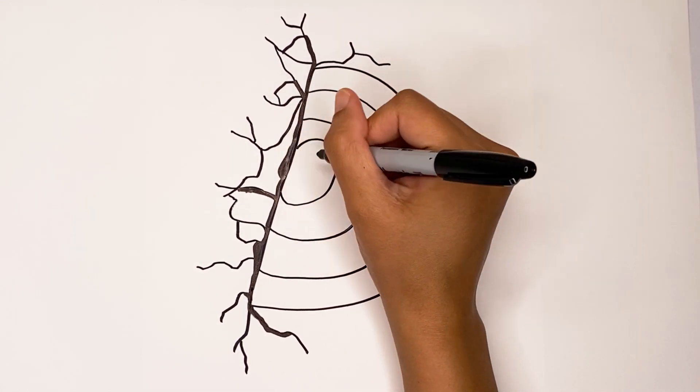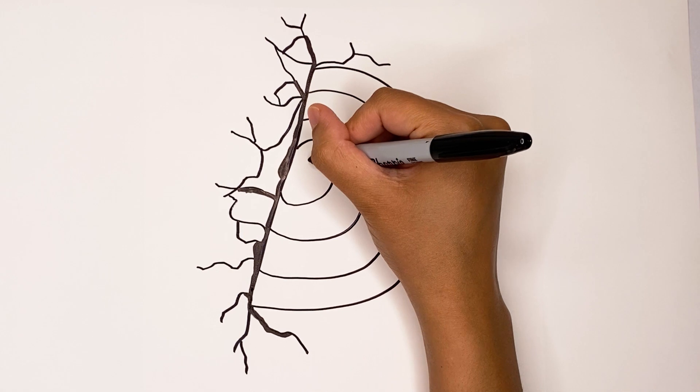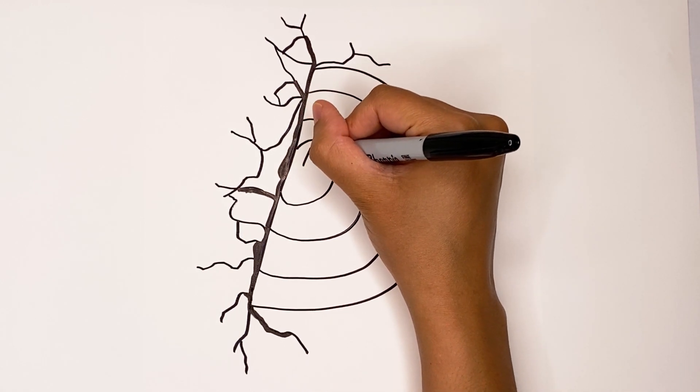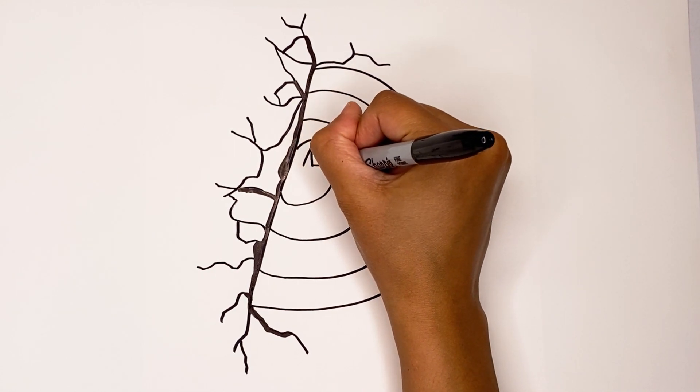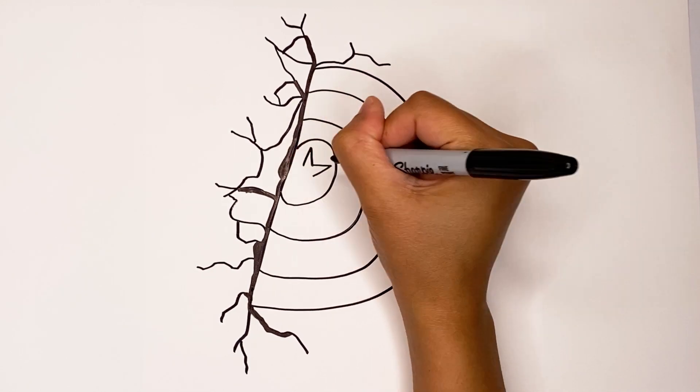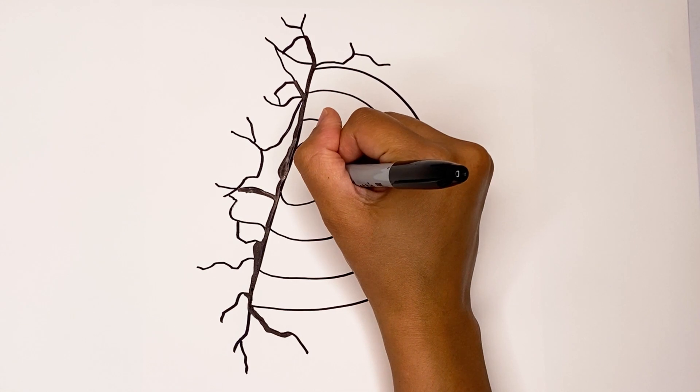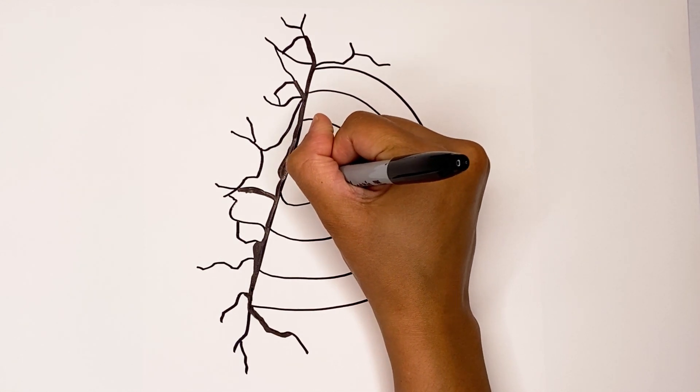Now inside the circle we need a star. Let's form the star by making a point up like that and then we're going to go out and in. Let's go back down and in again.